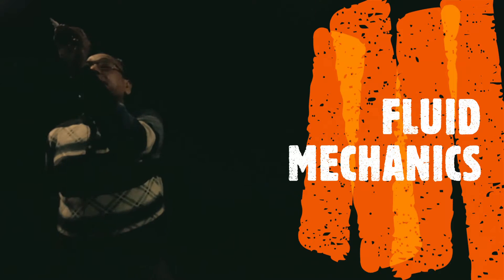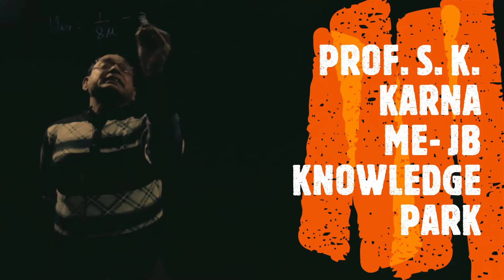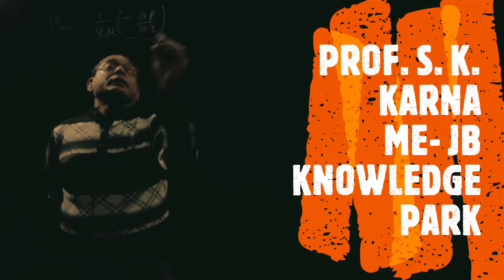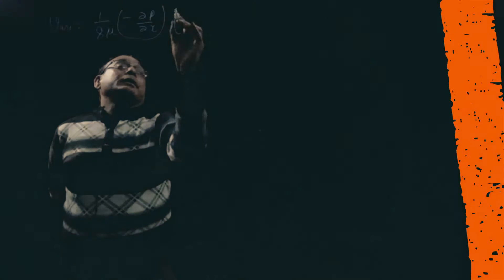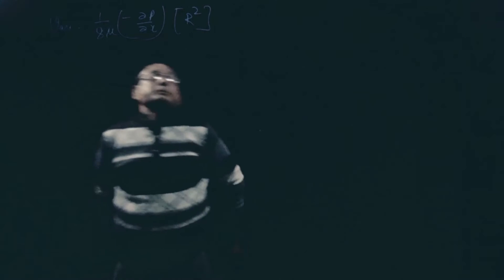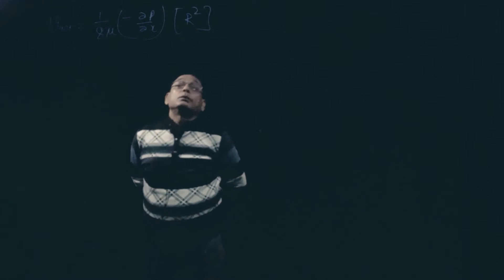Last class, we derived the relation of average velocity. That equation was: V_average = (1/8μ) · (-dP/dx) · R². This relation we have found out.